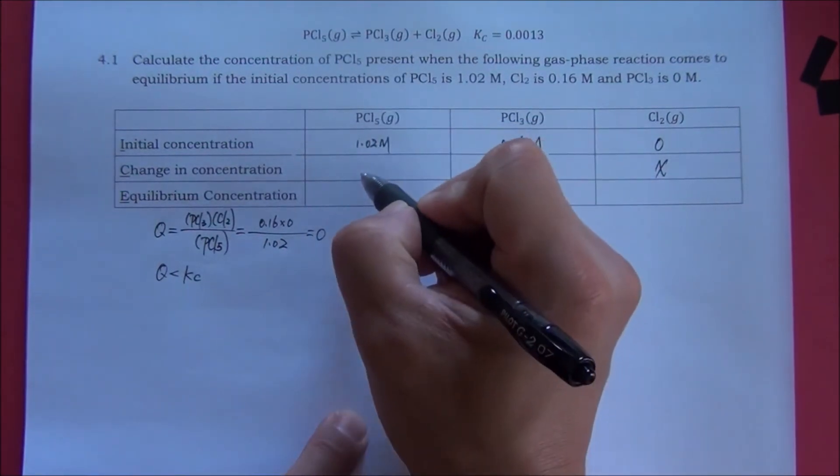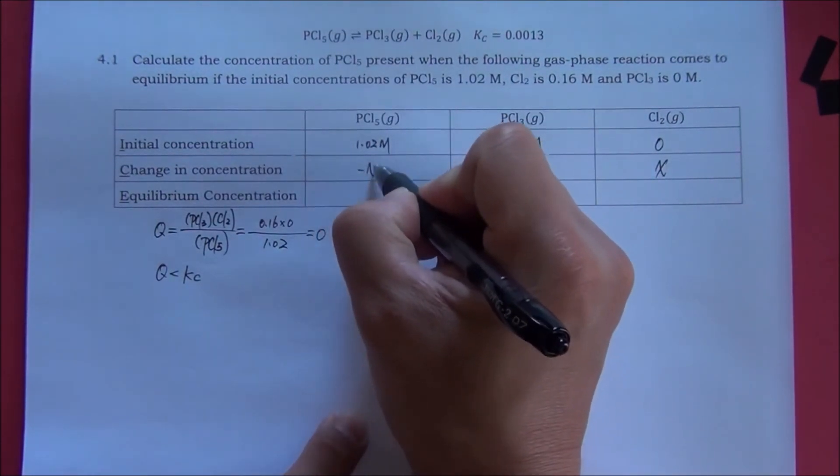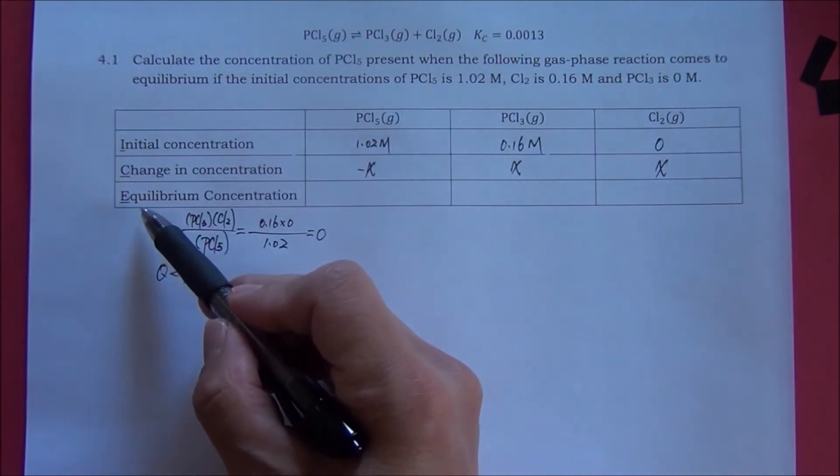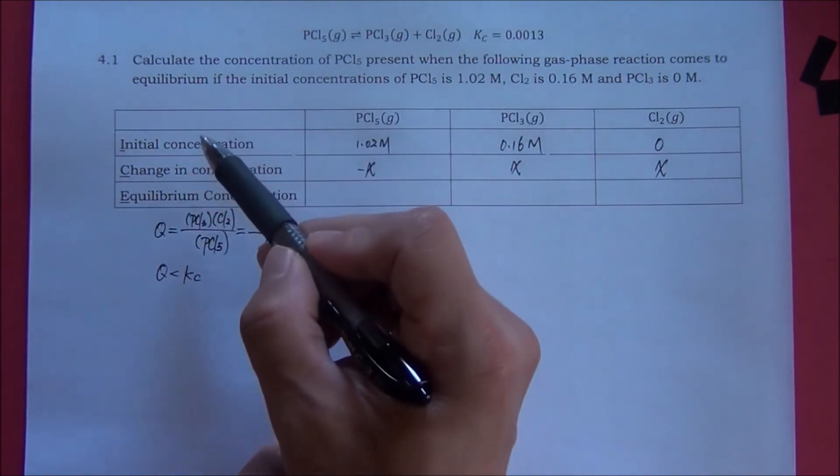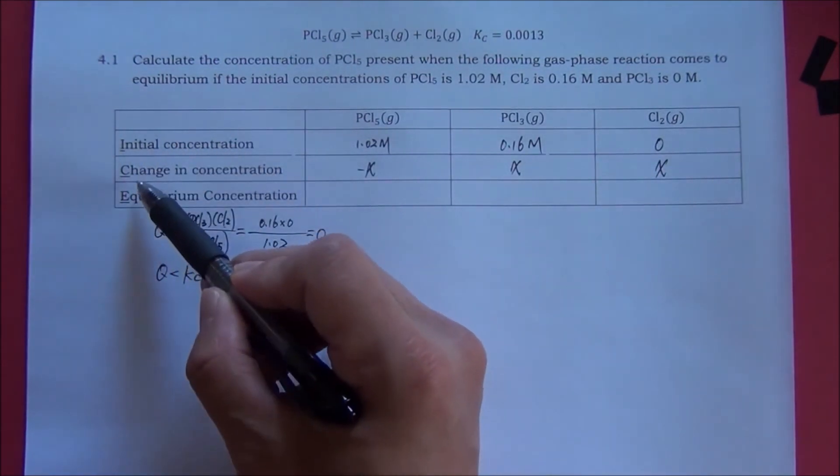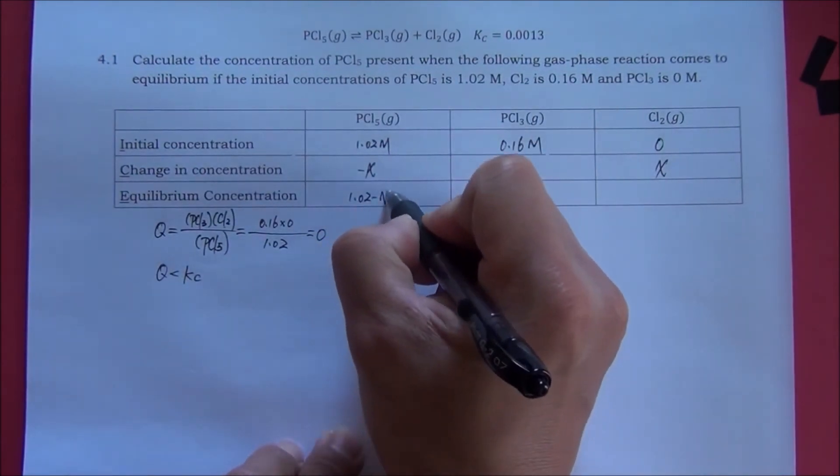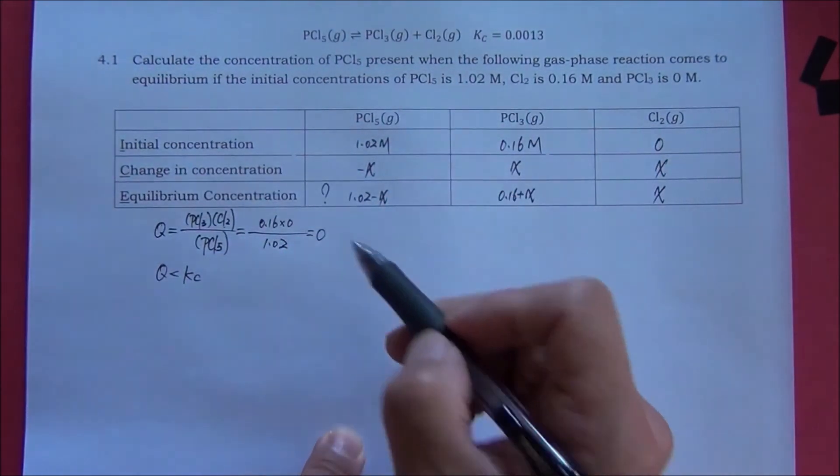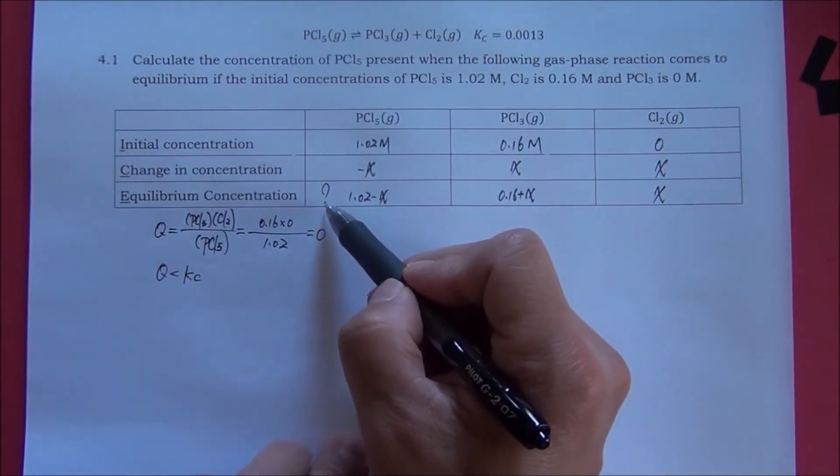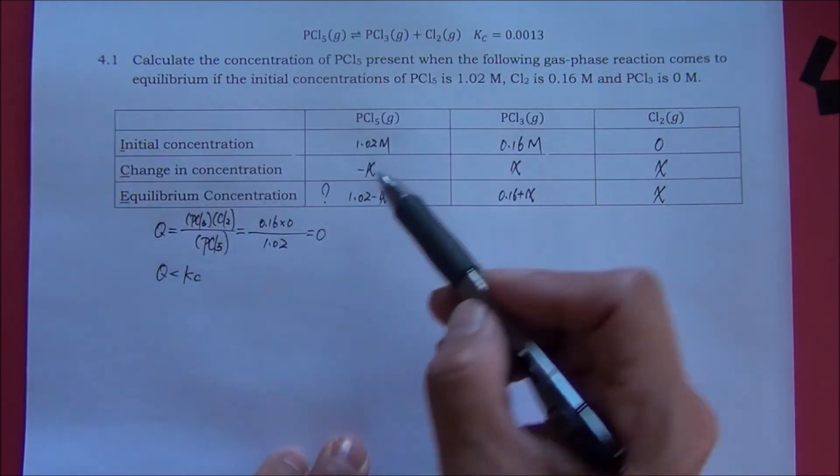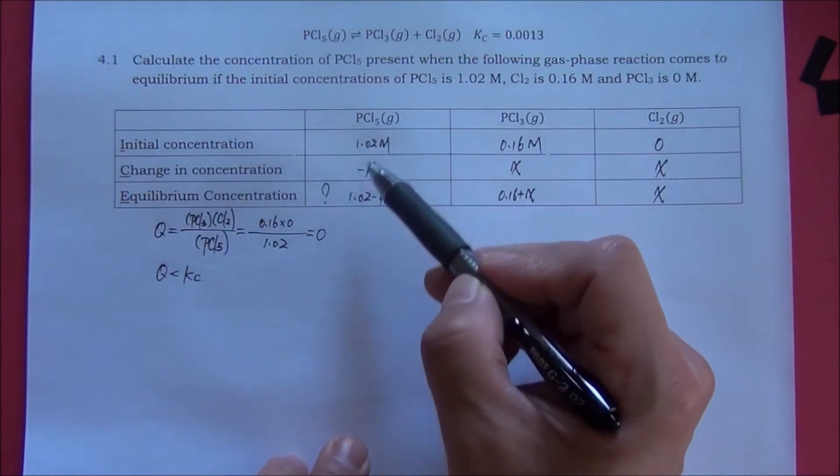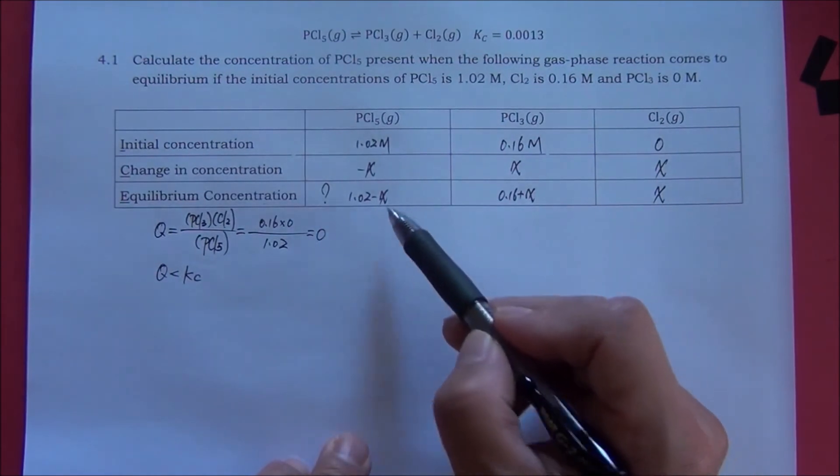The changing concentration should be negative x. The equilibrium concentration is always equal to the sum of the initial concentration and the changing concentration. I put down a question mark here to indicate the equilibrium concentration of PCl5 gas is what we are looking for. We are not looking for x.